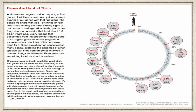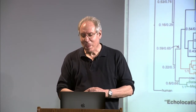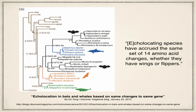Even behavior has genetic similarities. For example, echolocation — where bats send out a pitch and hear the echo back — is also found in whales and dolphins. Scientists found a set of 14 amino acids that code for this echolocation ability. It doesn't matter if you have wings or flippers; if you have echolocation, it's these same 14 amino acids producing it, because of a common ancestor.